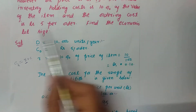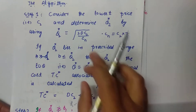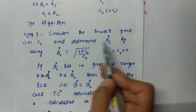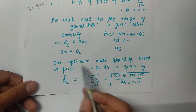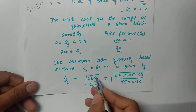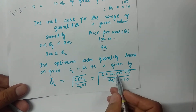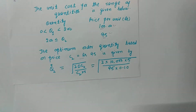Now we find the economic lot size. In Step 1, we consider the lowest price C2 = 95 rupees and determine Q*2 using the EOQ formula. The optimal order quantity based on price C2 is: Q*2 = square root of (2 × D × ordering cost) / (C2 × R). Substituting D = 10,000, ordering cost = 5, C2 = 95, and R = 0.10, we get Q*2 approximately equal to 103 units.